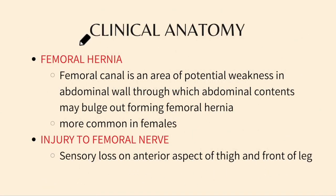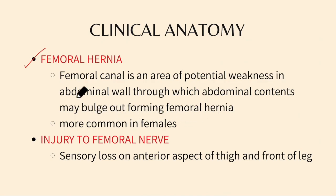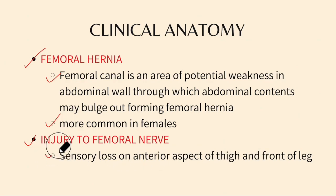Regarding the clinical anatomy of the femoral triangle: a femoral hernia can occur because the femoral canal is an area of potential weakness in the abdominal wall through which abdominal contents may bulge, forming a femoral hernia — it is more common in females. An injury to the femoral nerve can cause sensory loss on the anterior aspect of the thigh and the front of the leg.